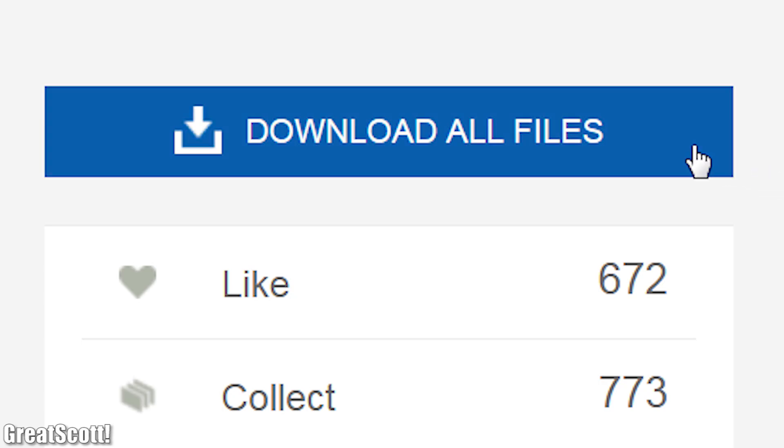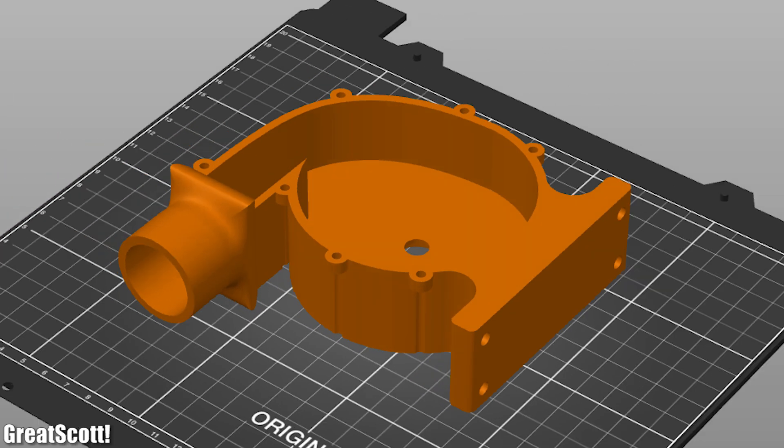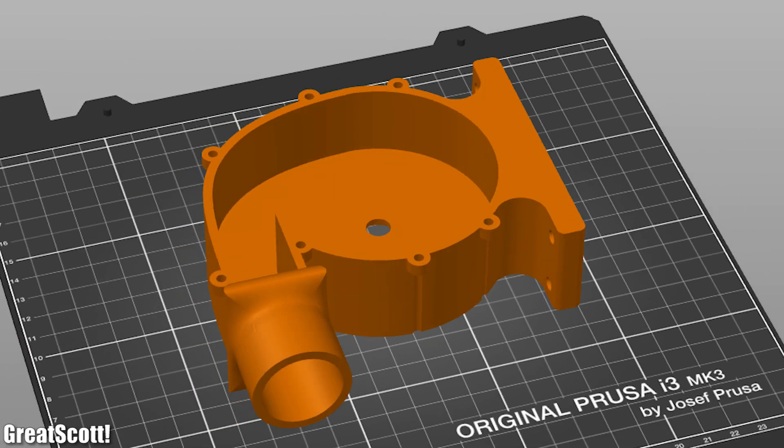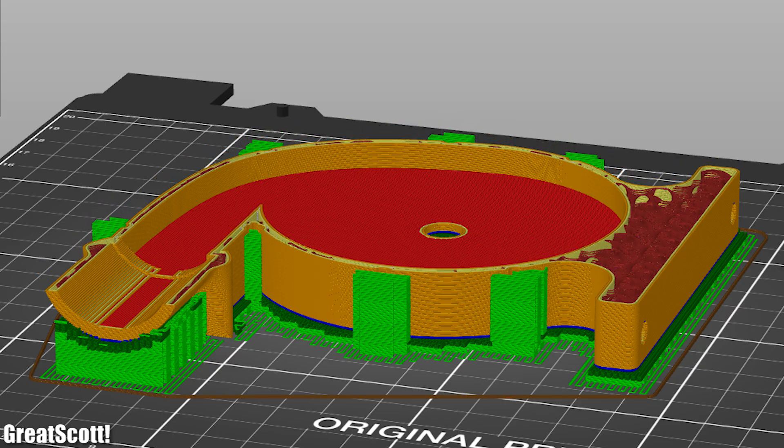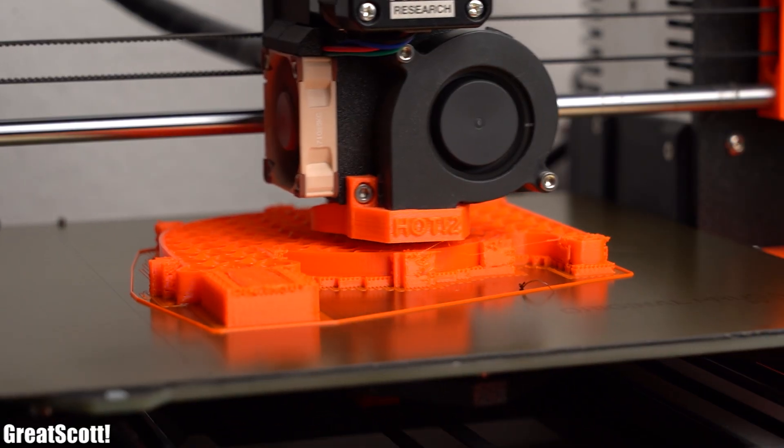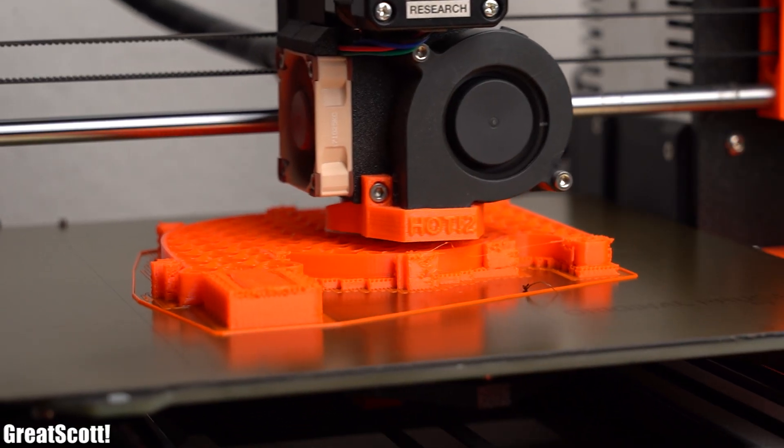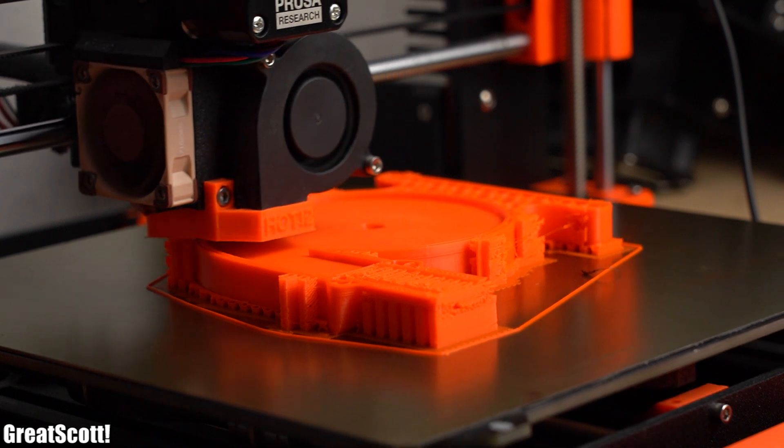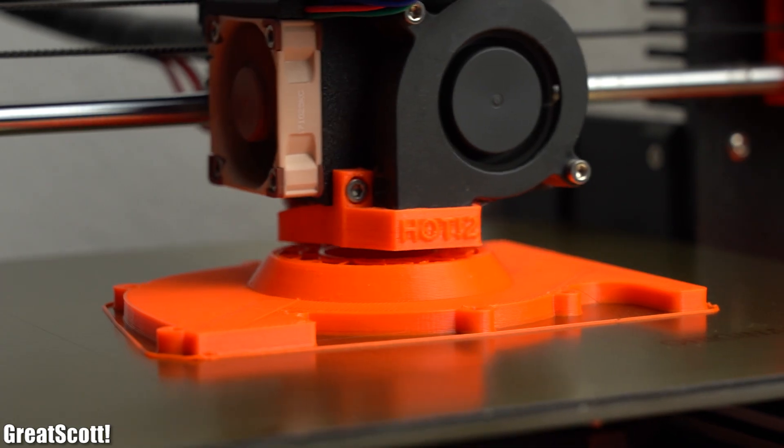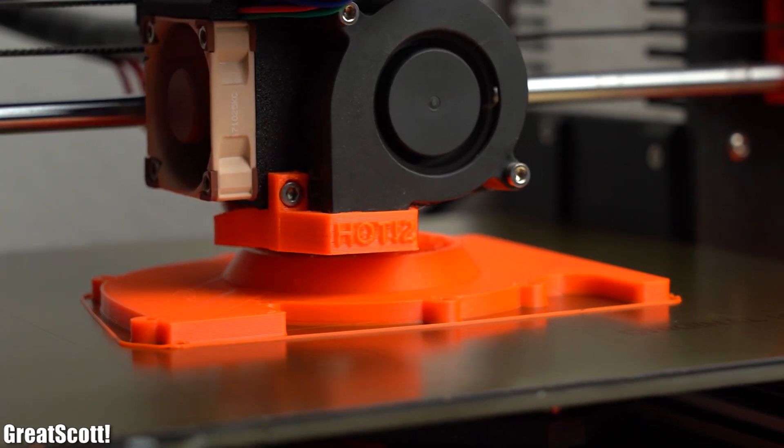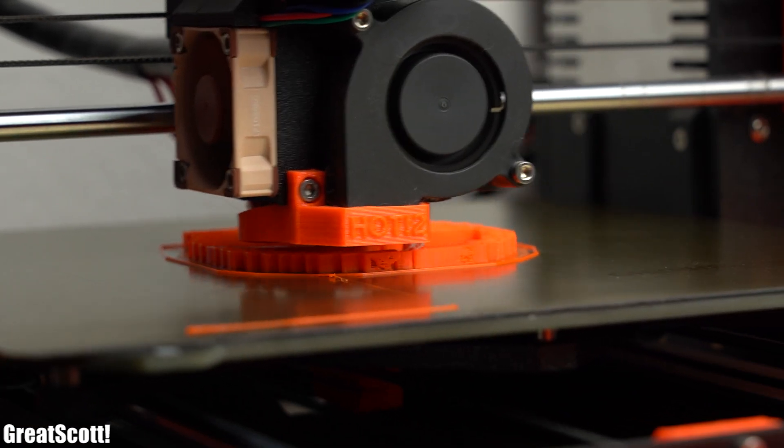So I downloaded its files and imported them into the Prusa slicer software, in which I obviously sliced them. Afterwards I 3D printed each model with my Prusa i3 Mark III 3D printer.